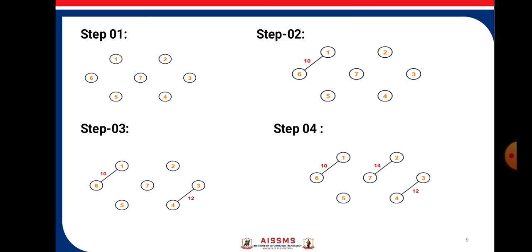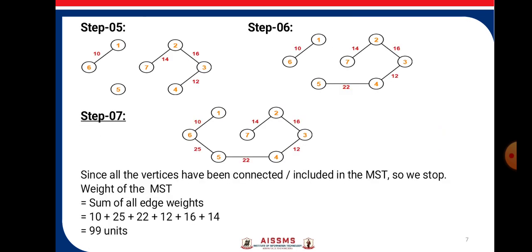In the fourth step, we are connecting 7 and 2 using an edge which is having the weight 14. Now, after that, we are connecting 4 and 5 which is having the weight 22.